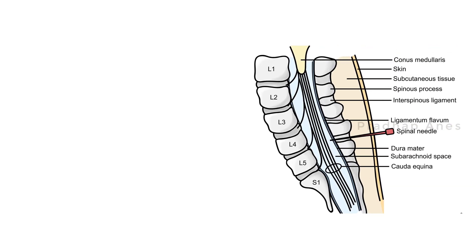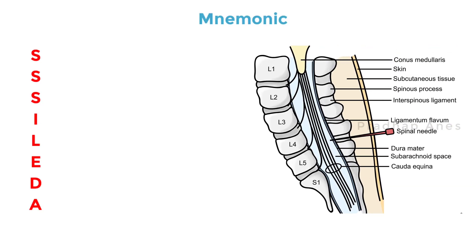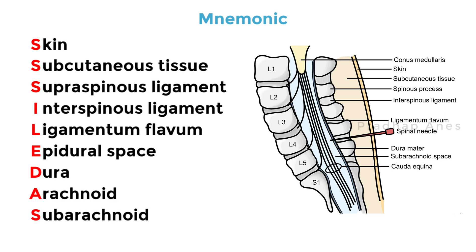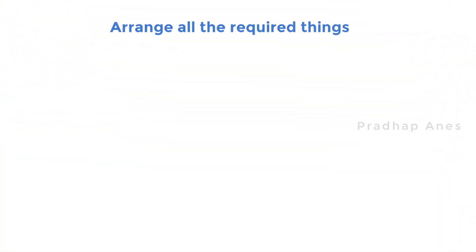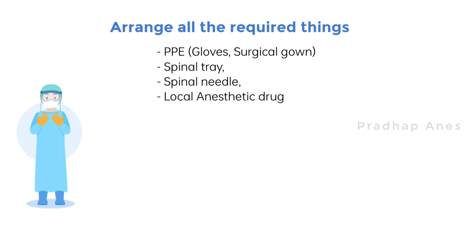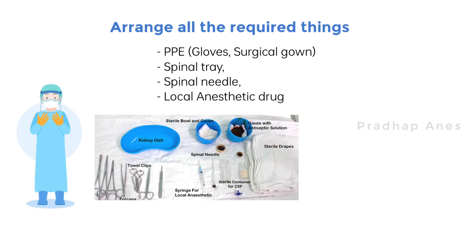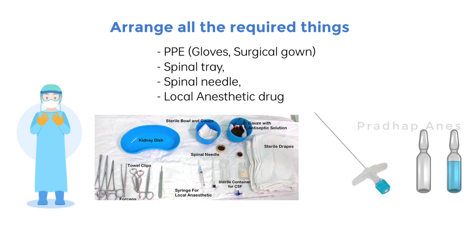You can easily remember these structures by the mnemonic S-S-S-I-L-E-D-A-S. First, arrange all the required things. This includes personal protective equipment like appropriately sized sterile gloves, surgical gown, spinal tray, and spinal needle — the size of which can vary according to the patient and procedure — hyperbaric local anesthetic drug, gauze piece, and antiseptic solution.